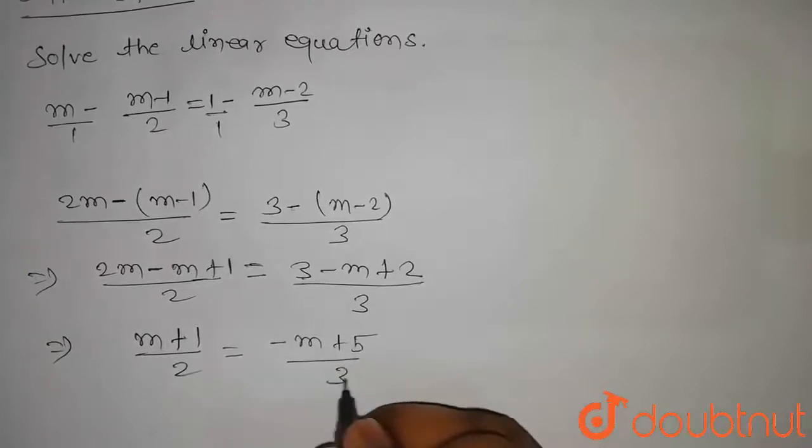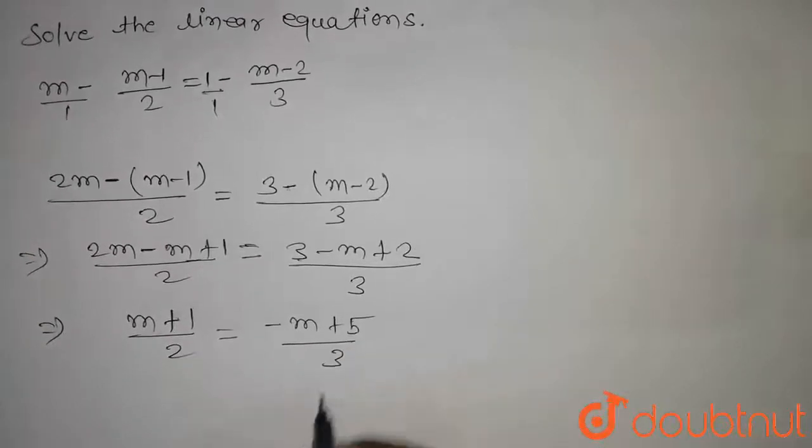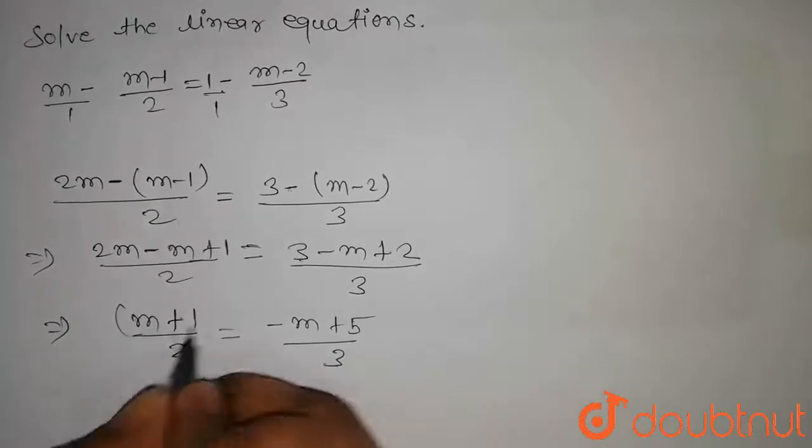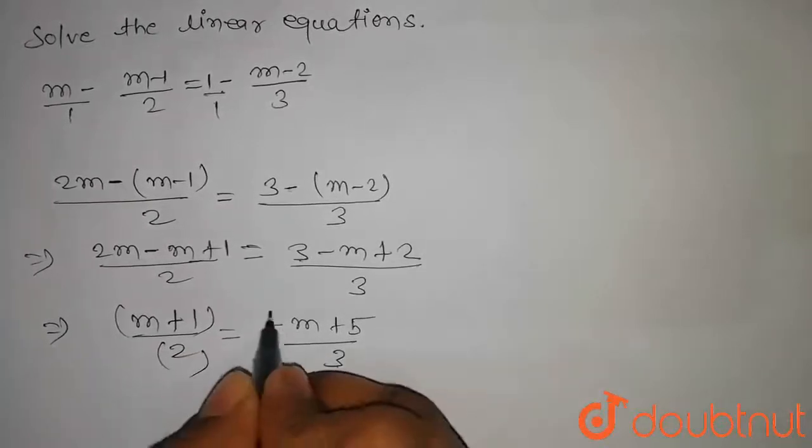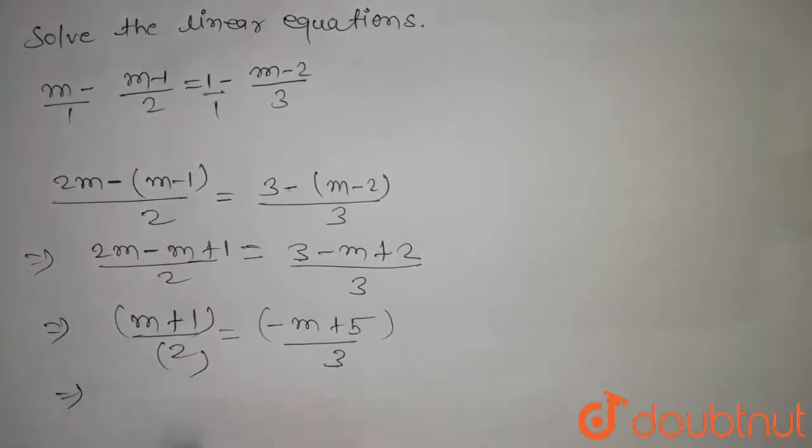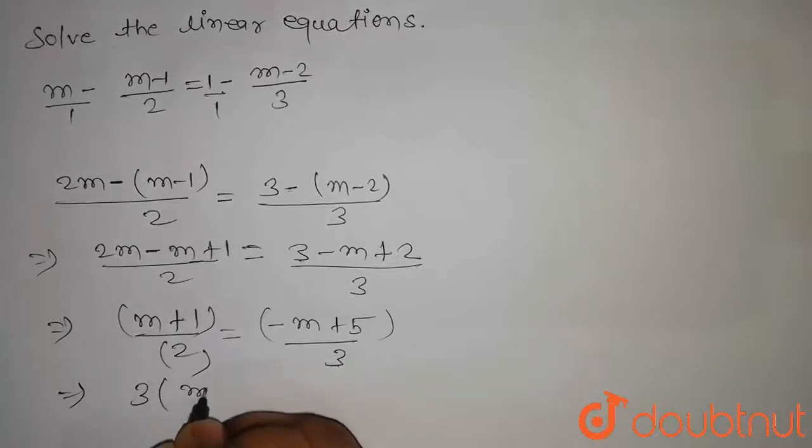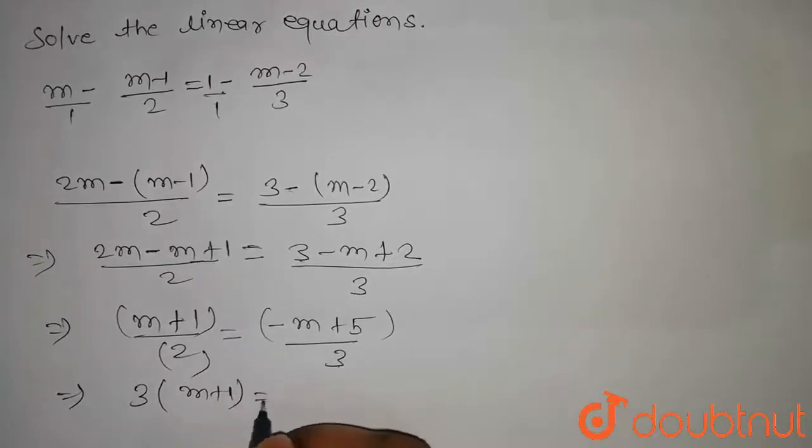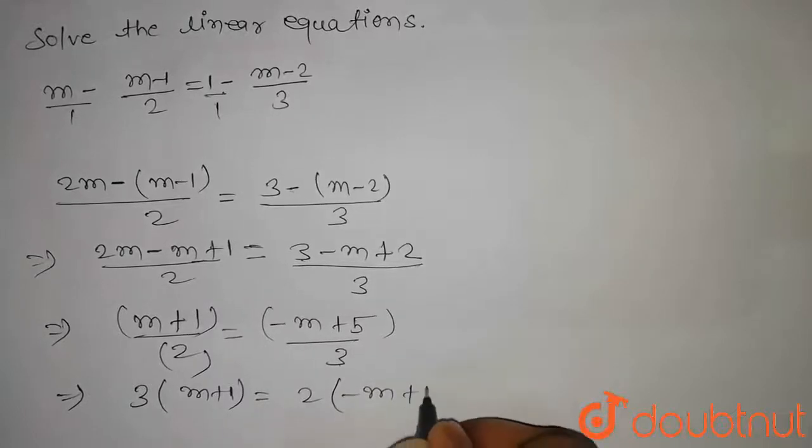Now we will multiply 3 by this part and 2 by this part. So we get 3 into m plus 1 equal to 2 into minus m plus 5.